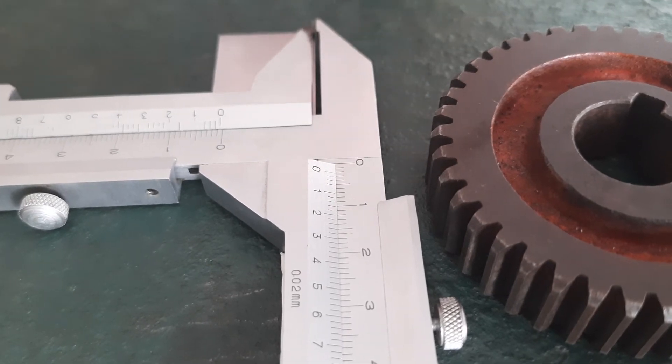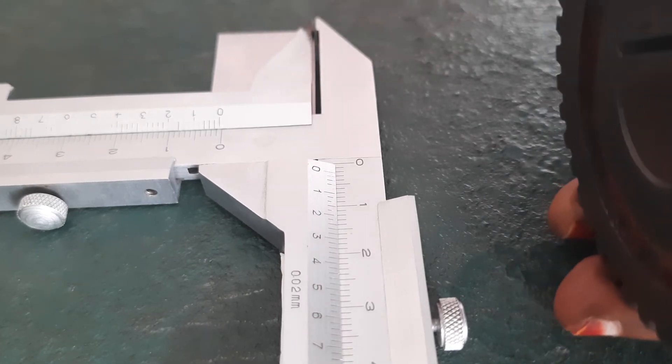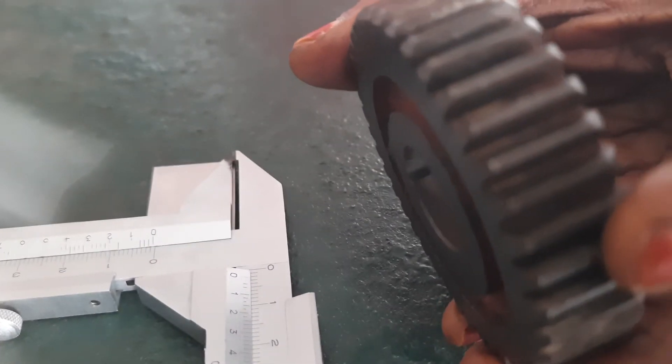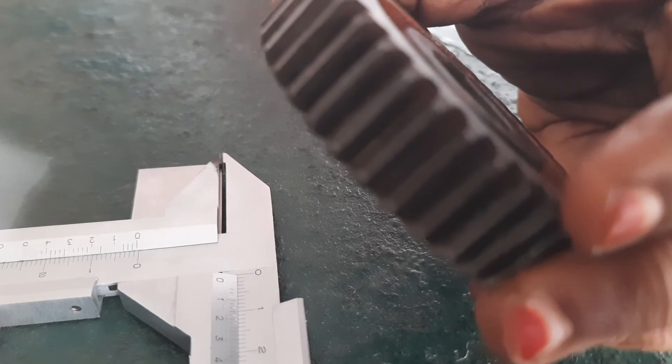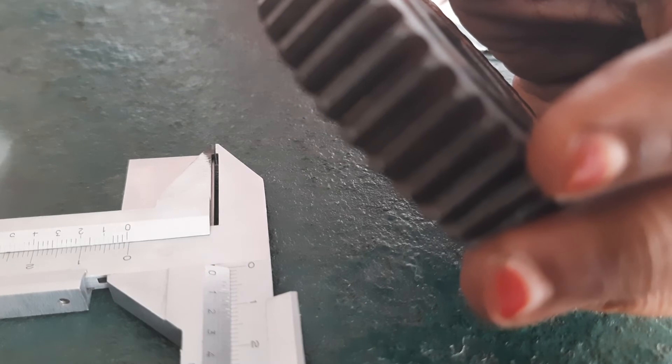The tooth thickness of a gear is defined as the arc length between opposite faces of a tooth, measured around the standard pitch circle. This is a length which cannot be measured directly, so in practice a different dimension of a gear is measured, which is then used to calculate tooth thickness.